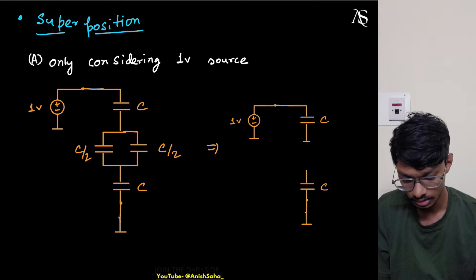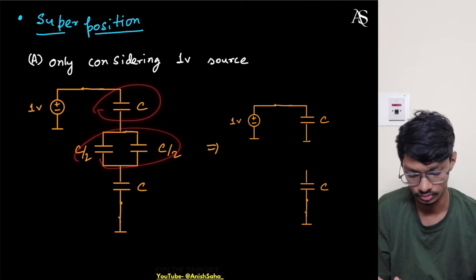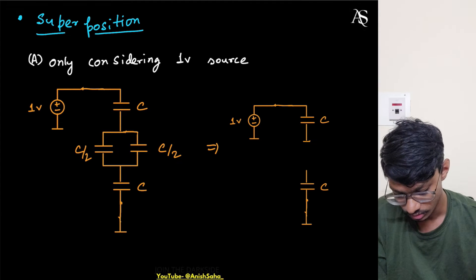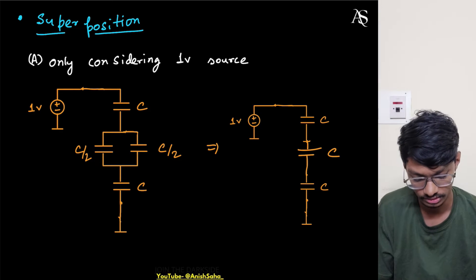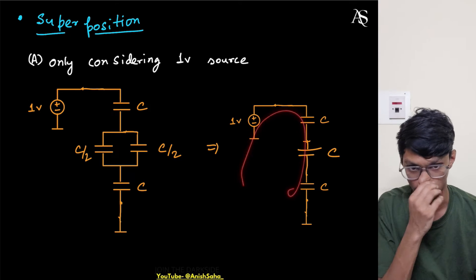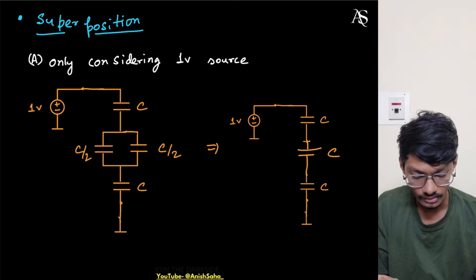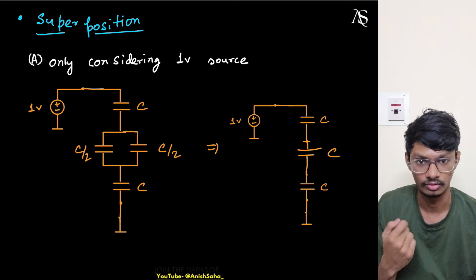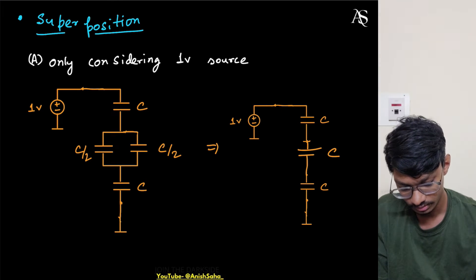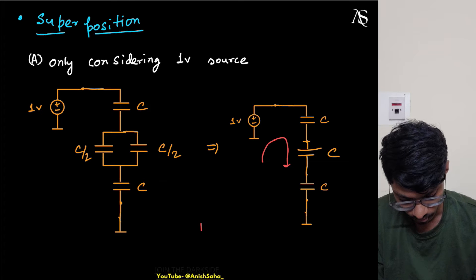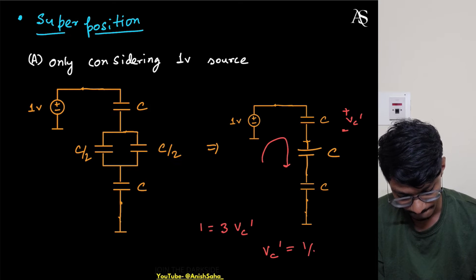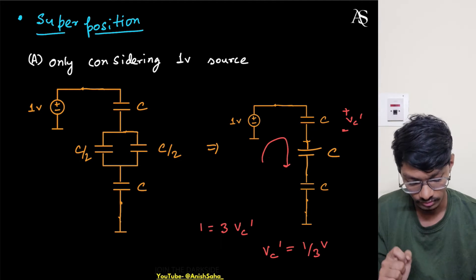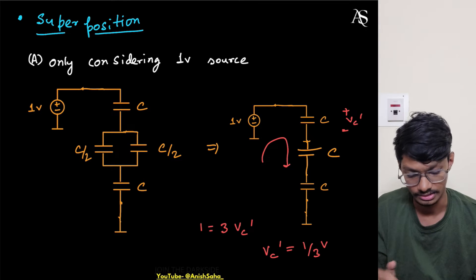Since I only need to find the voltage across this particular capacitor, I can replace the others with equivalent capacitance to simplify calculations. The equivalent capacitance will be C only — C by 2 in series with C by 2 gives C. All capacitors have the same value so the voltage drop across them is the same. Applying KVL: 1 equals 3·Vc', so Vc' equals 1/3 volt.